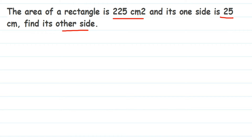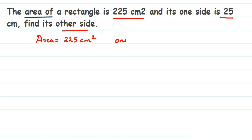This is a simple question. We're going to use the area of a rectangle to find the other side. Area is equal to 225 centimeter square, and one side is 25 centimeter. Let's assume this is the length — it doesn't matter if you assume it as breadth; the answer will be correct either way.